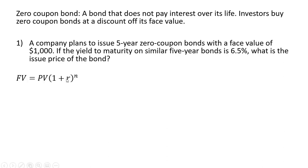We can simply use the future value formula to help solve this problem. On the left-hand side we have the future value, which is going to be $1,000 — you buy this bond and then in five years you're going to get $1,000. The present value is what we're going to try to solve for; that is the issue price of the bond. So PV is what we don't know.